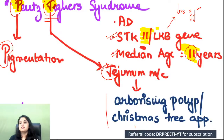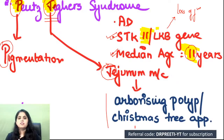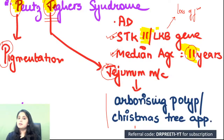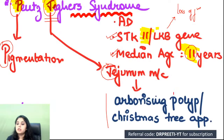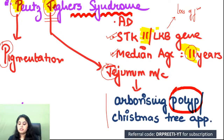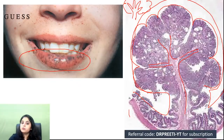Peutz-Jeghers polyps can cause fatal intussusception — the heavy polyp pulls down the intestine, causing one segment to telescope into another. So remember: Peutz-Jeghers → arborizing polyps → mucosal pigmentation → jejunum → intussusception as a complication.